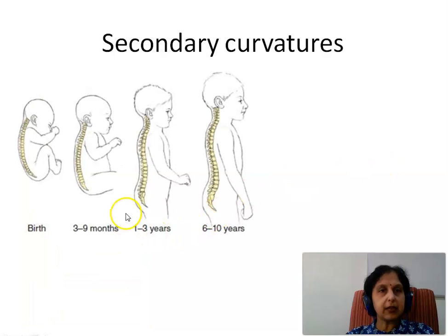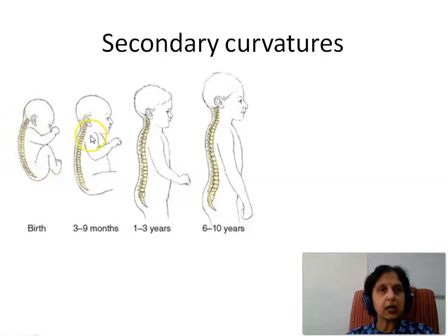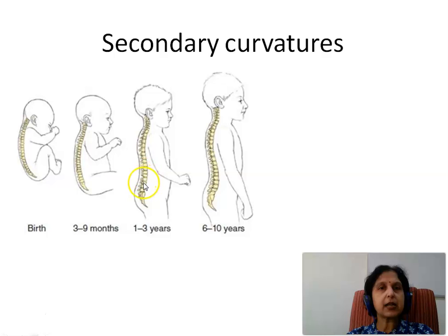At birth the baby has only the primary curvature. As the baby starts holding the head, the cervical secondary curvature develops, and when the baby starts standing and walking, that is when the lumbar curvature develops.